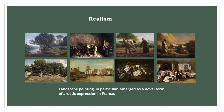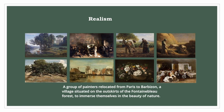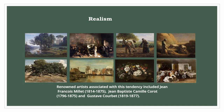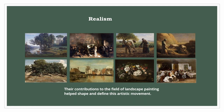Landscape painting emerged as a novel form of artistic expression in France. A group of painters relocated from Paris to Barbizon, a village situated on the outskirts of the Fontainebleau forest, to immerse themselves in the beauty of nature. They began by creating initial sketches outdoors and later refined them in their studios. Renowned artists associated with this tendency included Jean-François Millet, Jean-Baptiste Camille Corot, and Gustave Courbet, whose contributions helped shape and define this artistic movement.